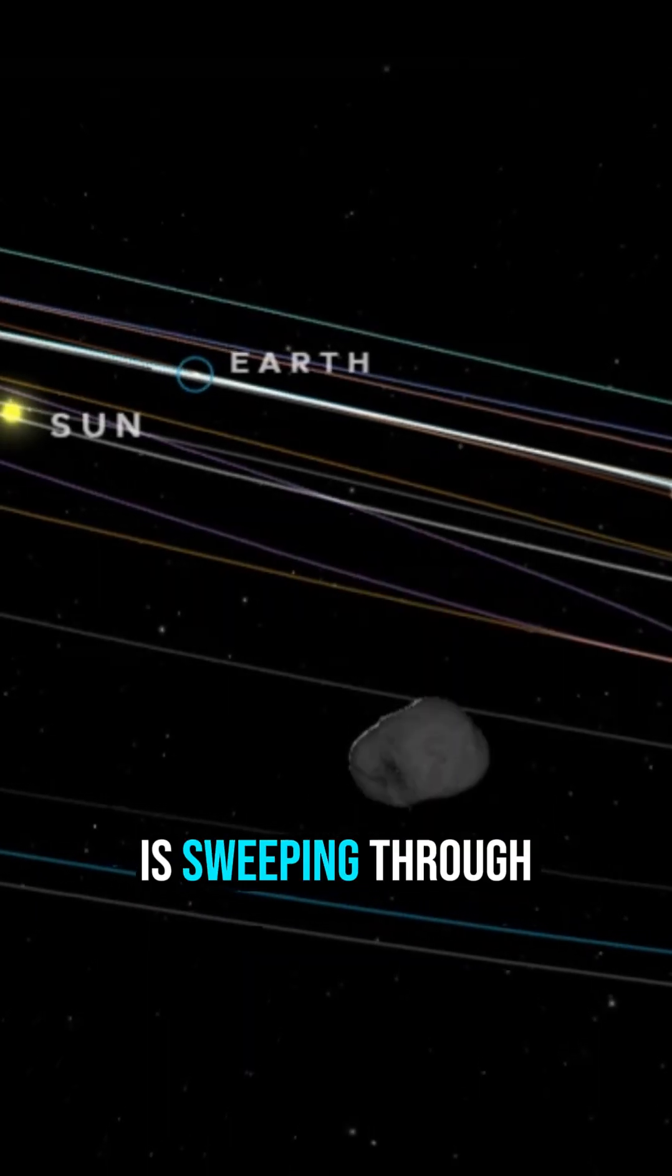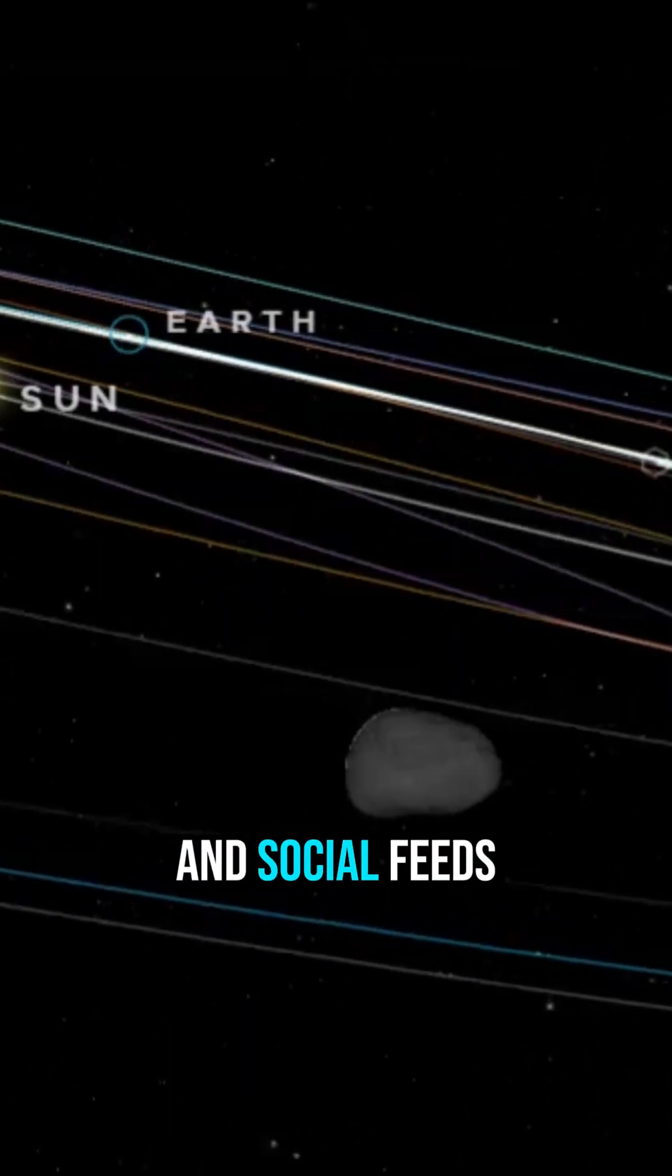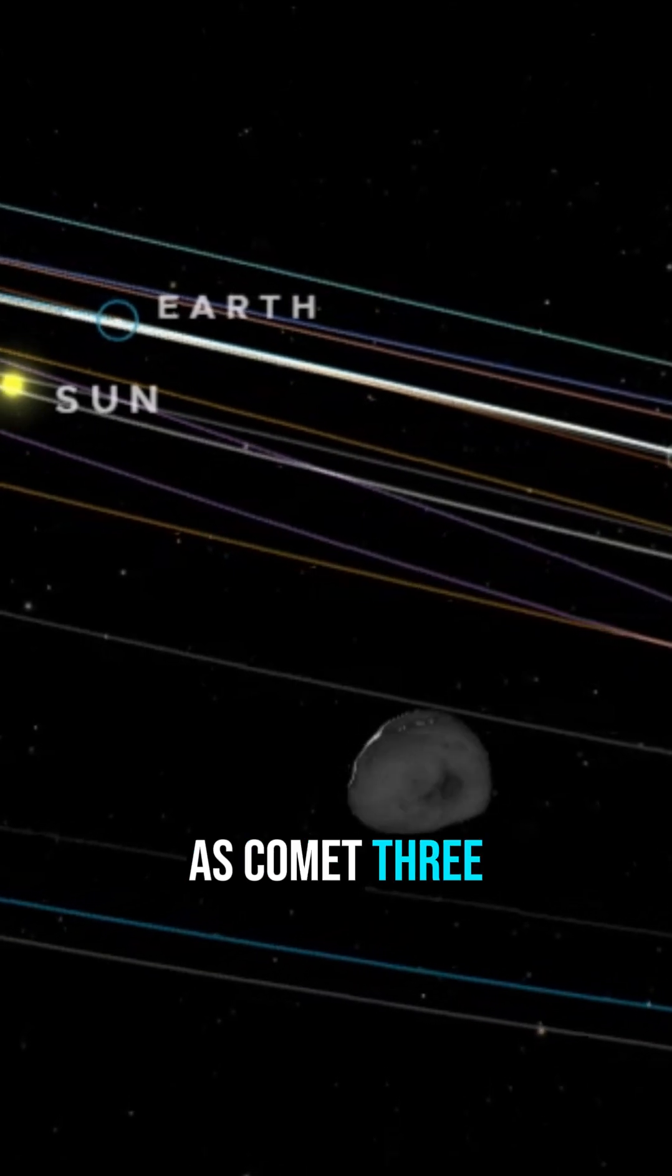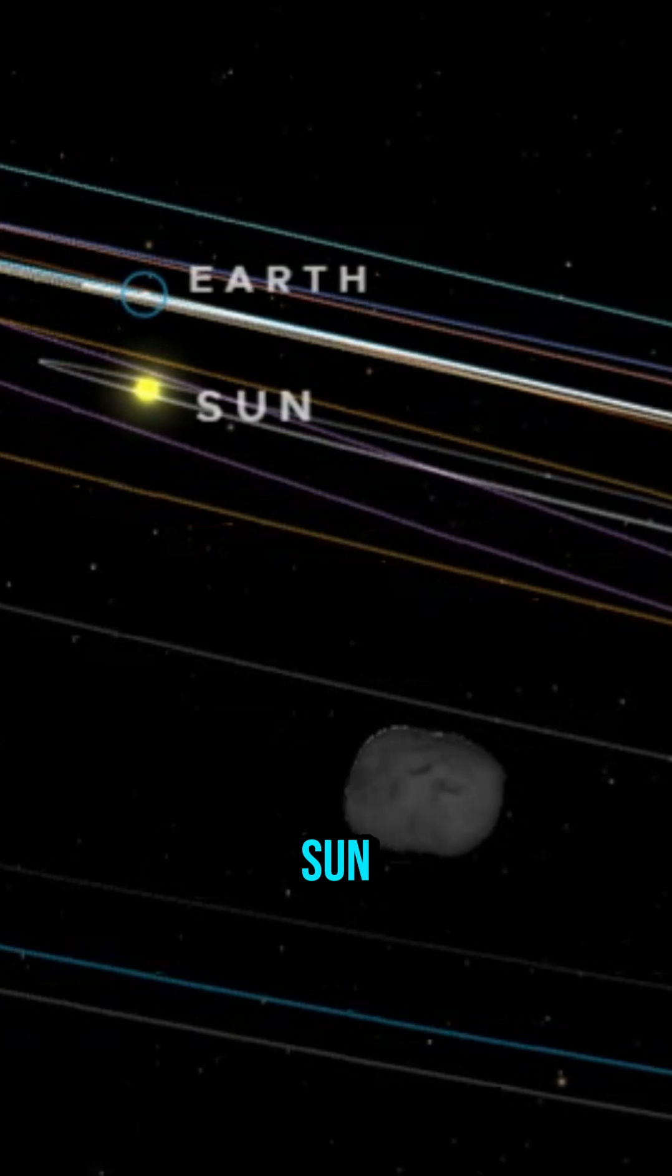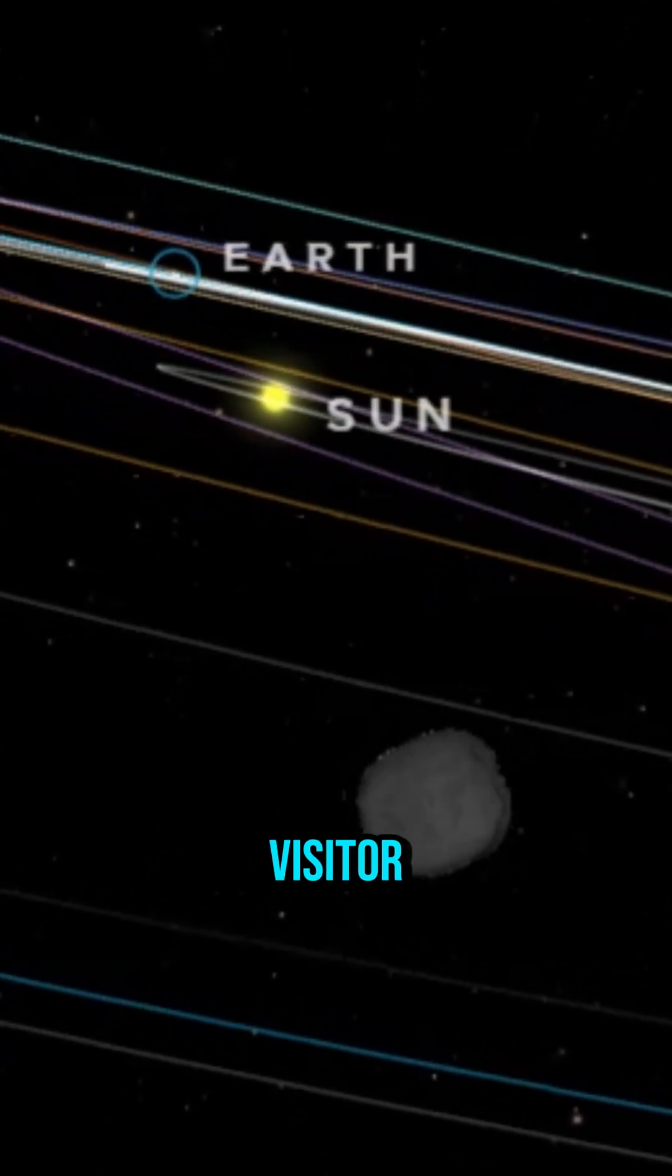A quiet storm of curiosity is sweeping through astronomy forums and social feeds as Comet 3i Atlas reappears after its close pass by the Sun. The object is not an ordinary visitor.